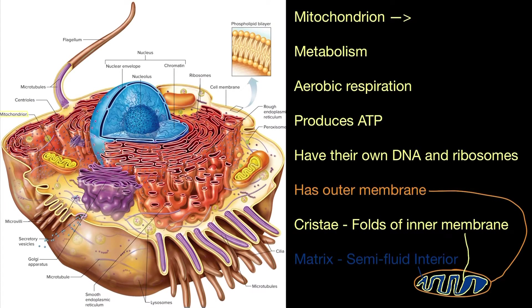Now the mitochondrion, or if you put it plural it would be mitochondria. This is what it looks like. It is involved in metabolism, aerobic respiration, and it produces ATP in the sense that it provides the chemical energy to attach a phosphate group to ADP. The mitochondrions have their own DNA and ribosomes.